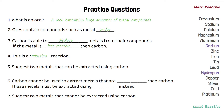Metals that can be extracted using carbon are those that are less reactive than carbon, so zinc, iron, tin, lead and copper would all be able to be extracted using carbon. We wouldn't use it for silver, gold and platinum because those native metals don't need to be extracted as they don't form compounds in the ground.